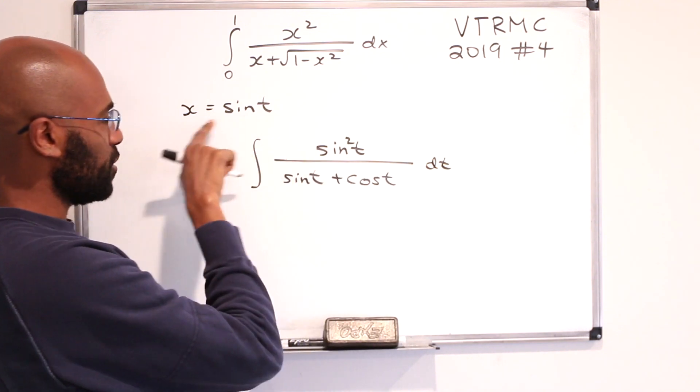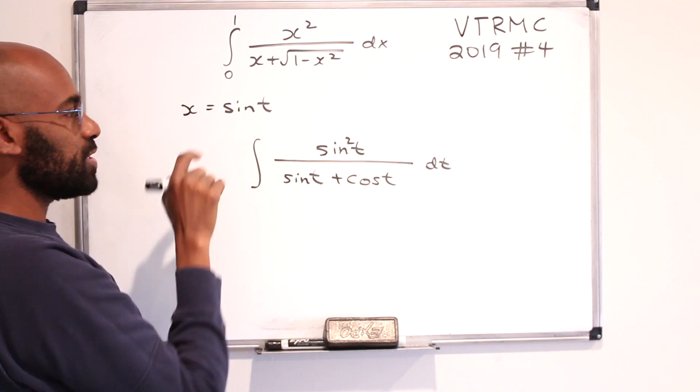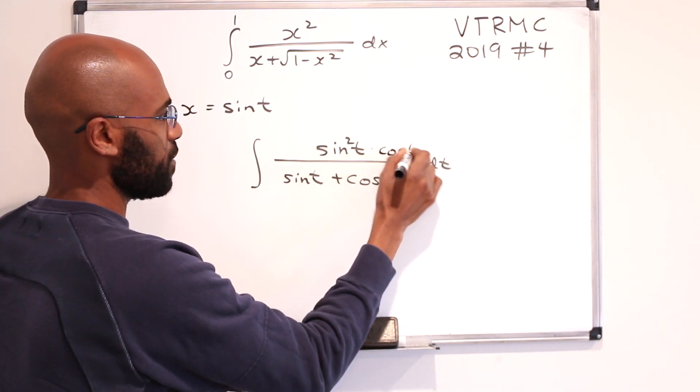but we need to actually do the differentiation here to substitute. dx is cosine t dt, so we'll get a cosine t over here.